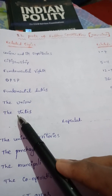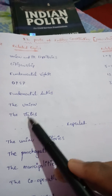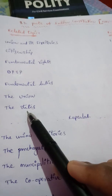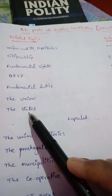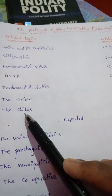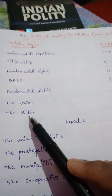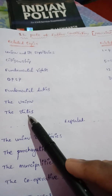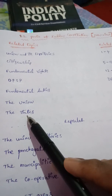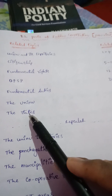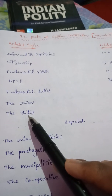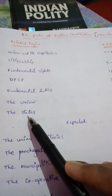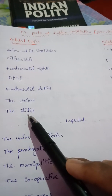Next, other provisions for ministers. Next, Advocate General of the state — here it is the Attorney General of the state. Next, qualifications of the Advocate General and his functions. Next, conduct of the business of the state government — rules, orders, allocation of duties, etc. Next, duties of the CM and creation of legislative councils in the states.